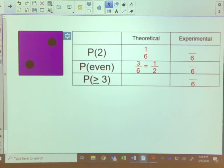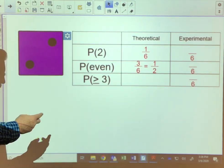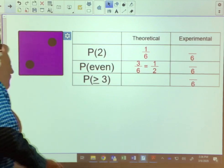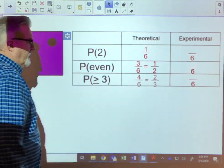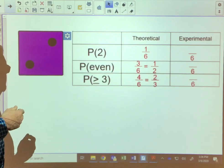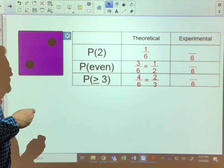And then for the probability of getting a number that's greater than or equal to three, well that would be three, four, five, and six. So there's four of those, so that would be four over six, which will simplify to two over three.